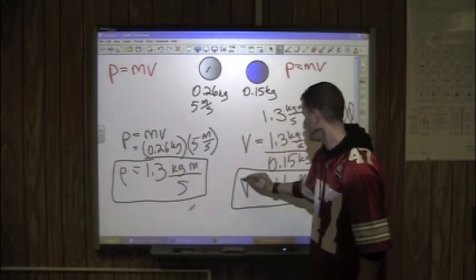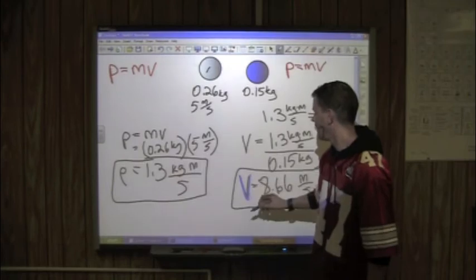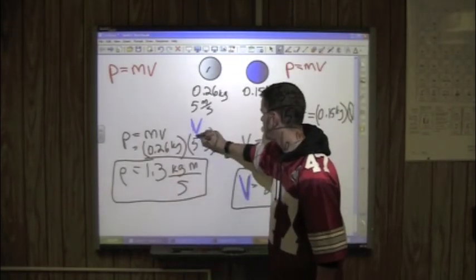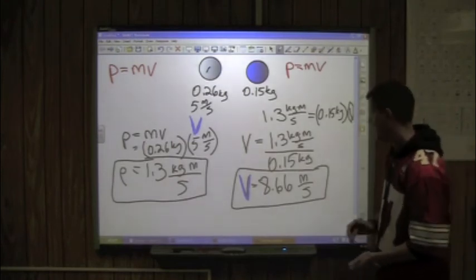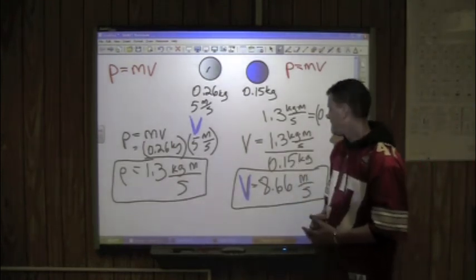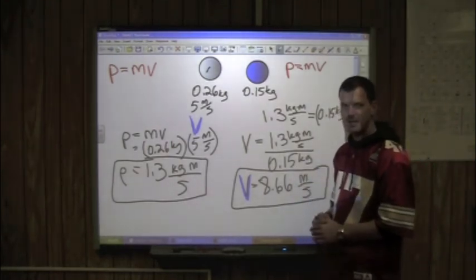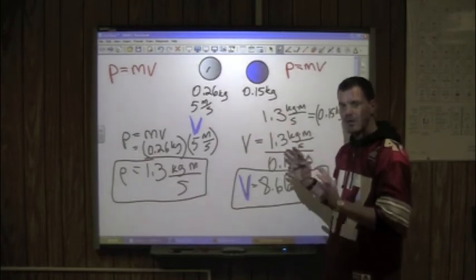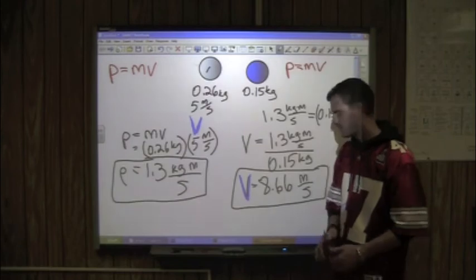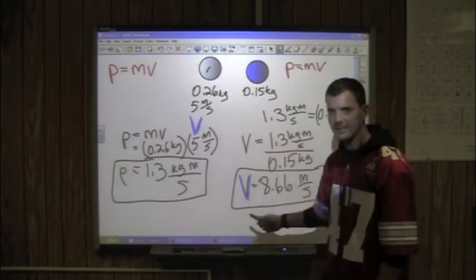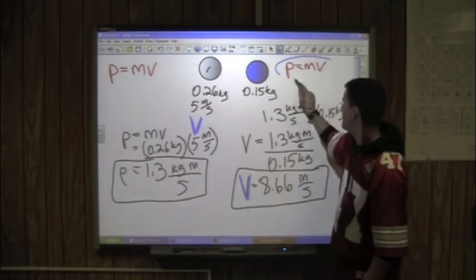So then we can see here that this is our velocity for one and this is our velocity for the other one. The heavier ball had a velocity of 5 meters per second. The lighter ball came out with a velocity of 8.66 meters per second. So whatever the cue ball hits, that second ball is actually going faster. And that makes sense.